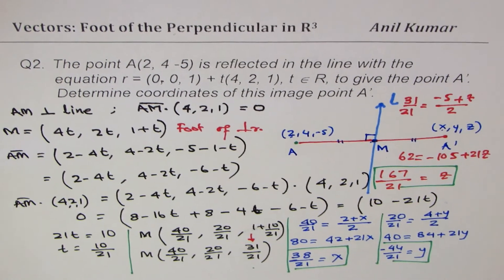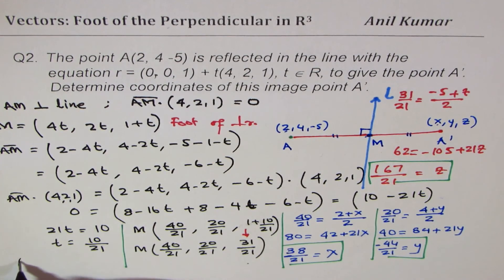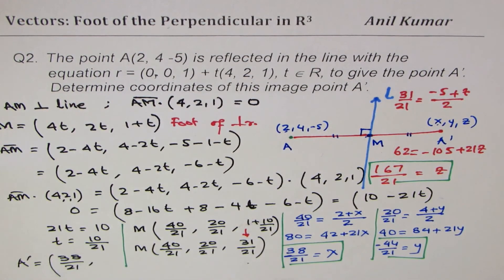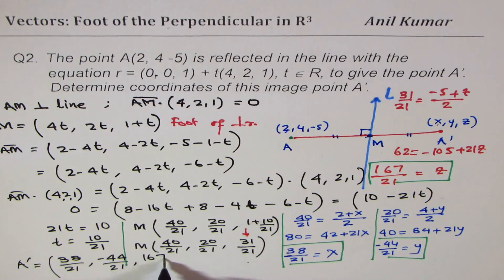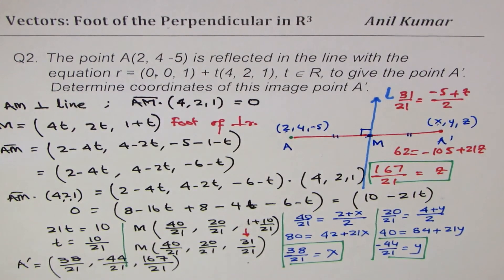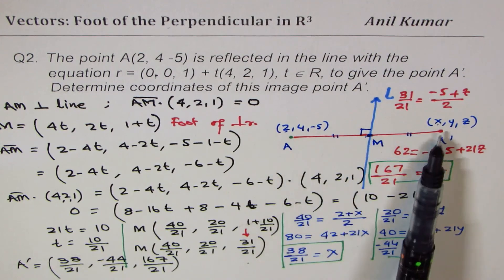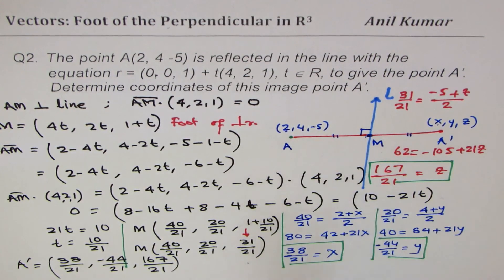So the image point A dash is (38/21, minus 44/21, 167/21). I hope that is absolutely clear — that is how you find the image point. As an exercise, you can also find the distance between the original and the image point. I hope this helps you understand finding the foot of the perpendicular. Thanks for watching — feel free to write comments, share your views, and if you like and subscribe to my videos, that'll be great. Thank you and all the best.